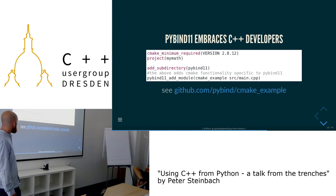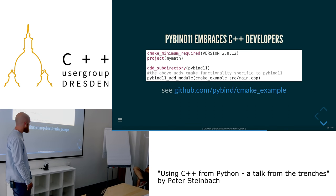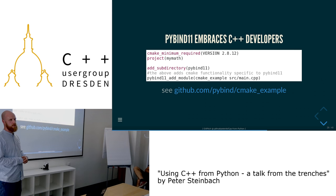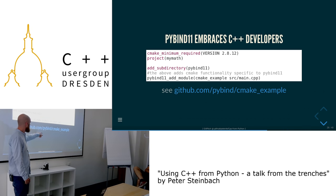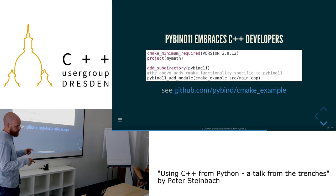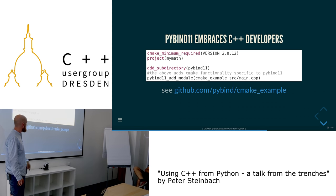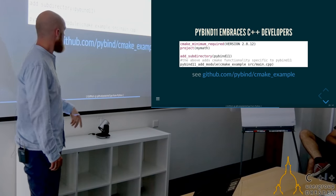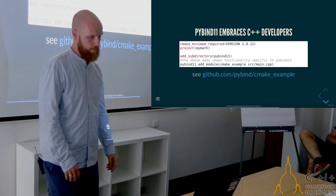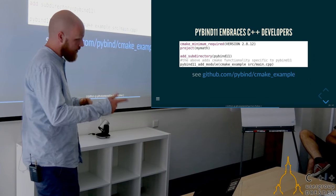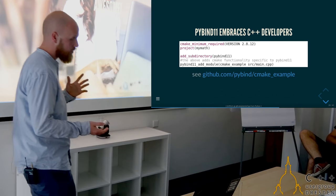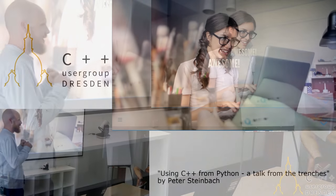PyBind embraces the everyday duties of C++ programmers because it comes with a CMake example. You can just use it and start integrating your workflow. The only thing you have to do is add the directory where the PyBind11 repository resides and then say pybind11_add_module — whatever you want to call it — and the path to your source code. That's quite nice. When I saw these two things together I thought it cannot get better, but it does.